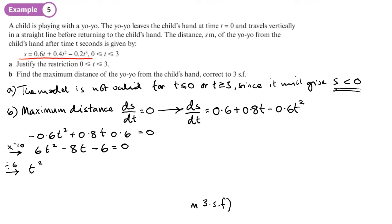Divide everything by 6. Oh, dividing by 6 is not a good idea because I want to keep whole numbers. So let's divide everything by 2. It's more like it: 3t squared minus 4t minus 3 equals 0.